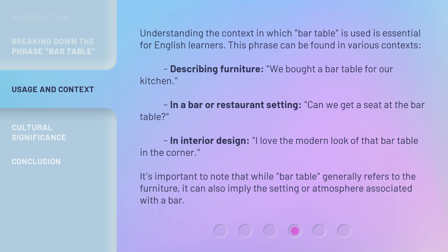Understanding the context in which 'bar table' is used is essential for English learners. This phrase can be found in various contexts: describing furniture — 'We bought a bar table for our kitchen'; in a bar or restaurant setting — 'Can we get a seat at the bar table?'; in interior design — 'I love the modern look of that bar table in the corner.' It's important to note that while 'bar table' generally refers to the furniture, it can also imply the setting or atmosphere associated with a bar.